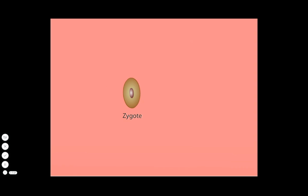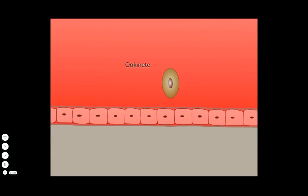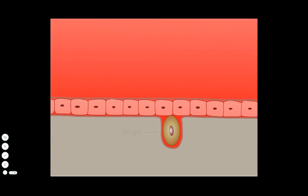The zygote matures into a motile cell called an ookinete and migrates to the wall of the mosquito's gut, where it develops into an oocyst. Inside the oocyst, cell division occurs to produce many new cells, again in the form of sporozoites.